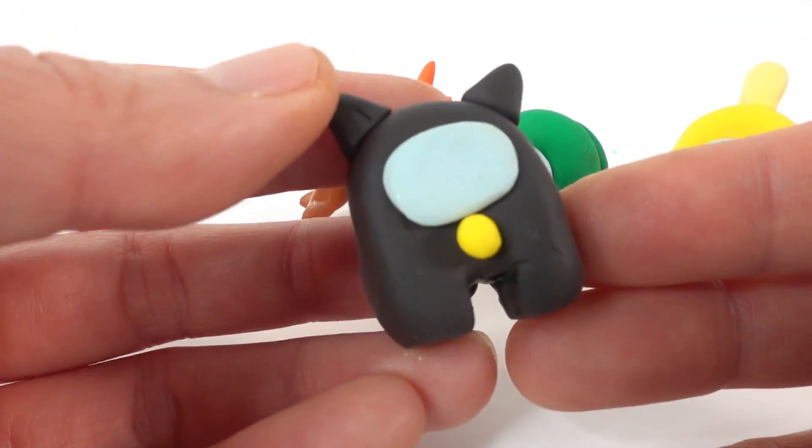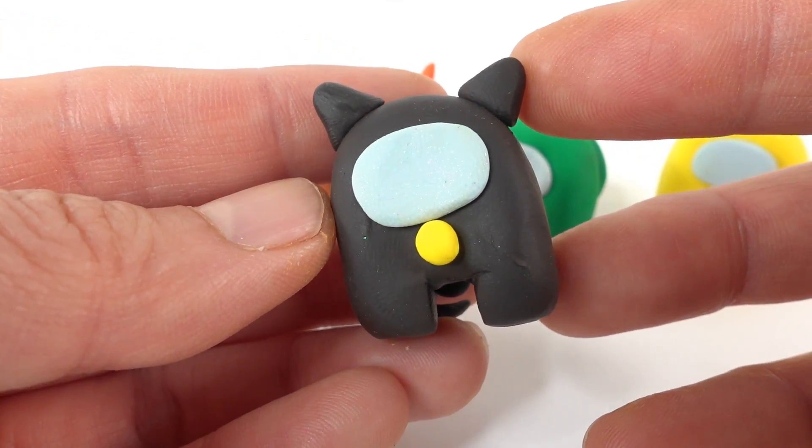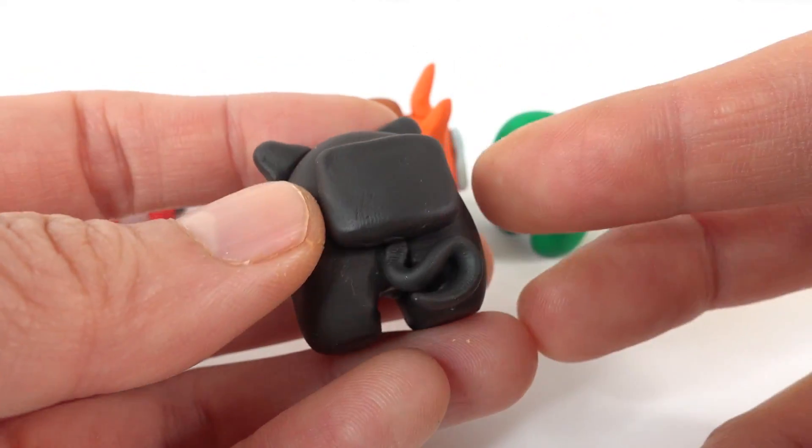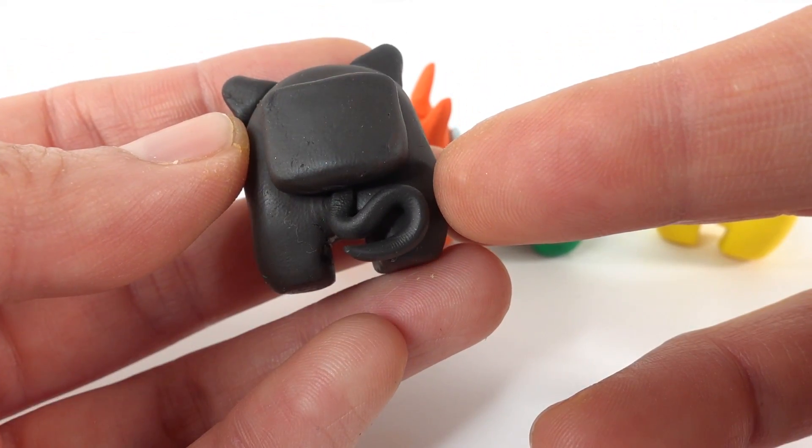Next, we have Cat Noir. Cat Noir has his little black ears and a little bell in the front. In the back here, he has the oxygen pack and a little tail.